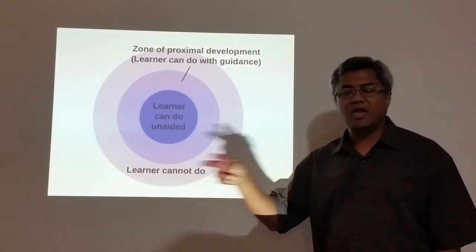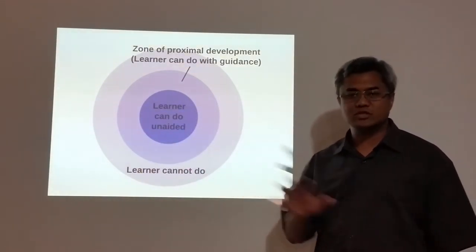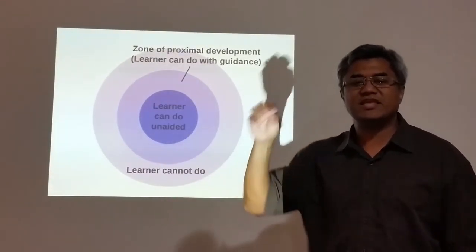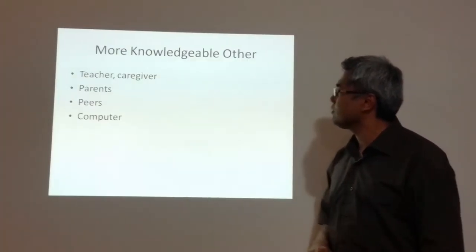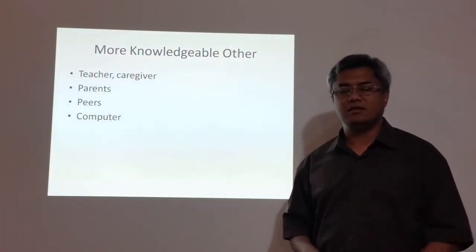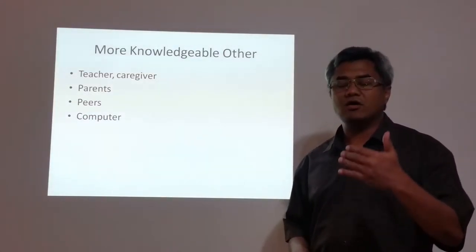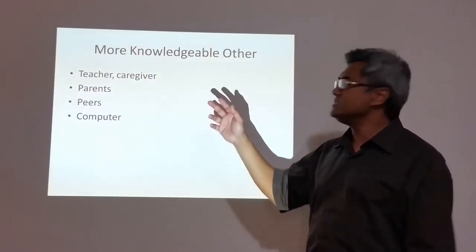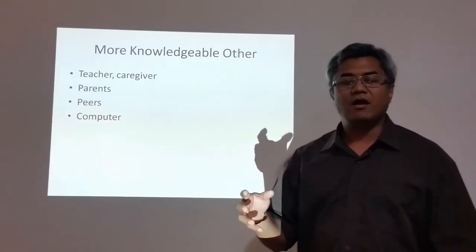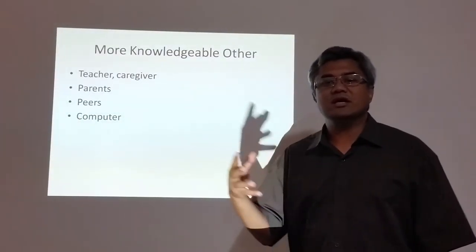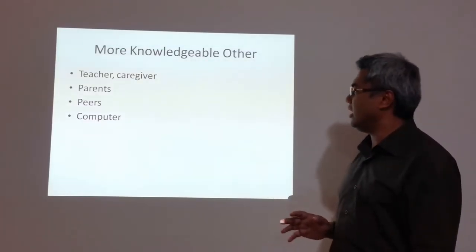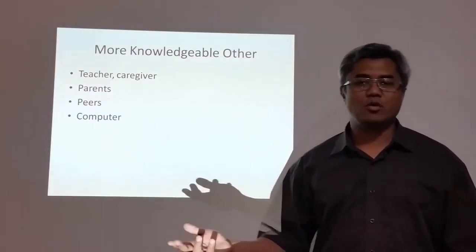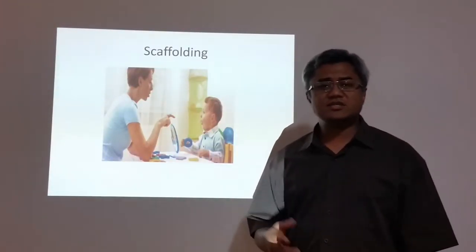The gap between what the learner can do and their potential development is the zone of proximal development. It is in this zone that a lot of actual learning takes place. How does this learning actually take place in relation to interaction with the social? In this learning theory, it is the more knowledgeable other which actually assists in the learning. Who are these more knowledgeable others? It is actually the teacher or the caregiver, the parents, peers, and nowadays it is the internet or the computers. This is done through scaffolding.